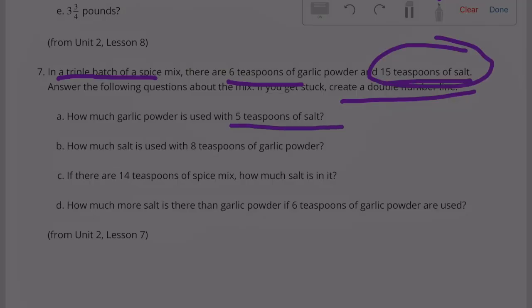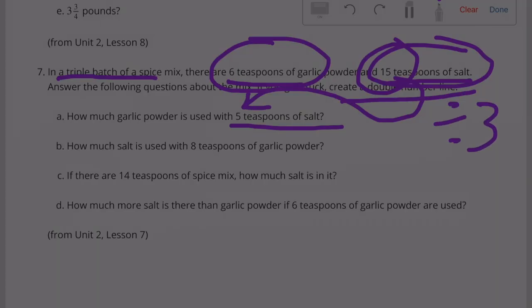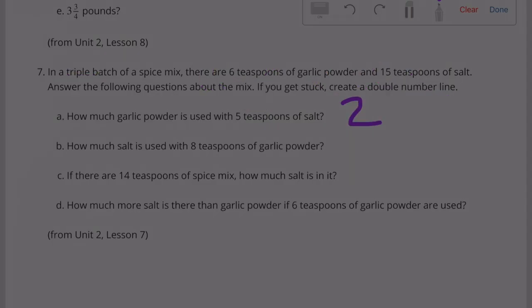How much garlic is used with 5 teaspoons of salt? With 15 teaspoons of salt, there's 6 teaspoons of garlic. In order to make 15 teaspoons of salt turn into 5 teaspoons of salt, we need to divide it by 3. So 6 teaspoons of garlic divided by 3 would equal 2. 2 teaspoons of garlic powder with every 5 teaspoons of salt.